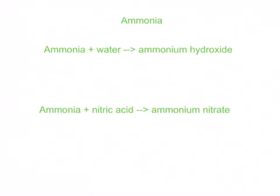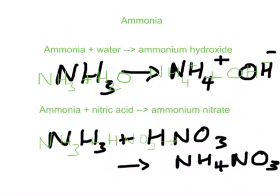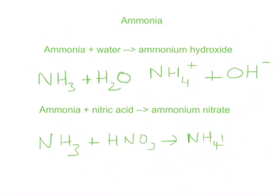Ammonia, NH3, will react with water to form ammonium hydroxide. This is because the ammonia accepts a hydrogen ion from water to form NH4+ and OH-. Therefore, ammonia is a base. If we react ammonia with nitric acid, we will form ammonium nitrate, which has a formula NH4NO3. Ammonium nitrate is used to spread on fields to act as a fertilizer.